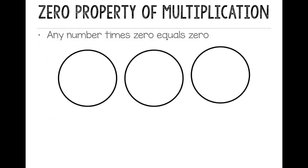So if I have 3 groups with nothing in them, I have 3 groups of 0. And 3 times 0 would equal 0. I don't actually have anything. And this works the same. If I have 0 times something, because that would mean I have 0 groups. And if I don't have any groups, I don't actually have anything. So any number times 0 equals 0.